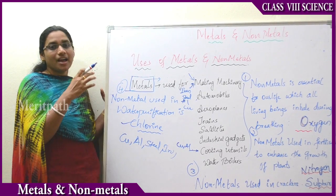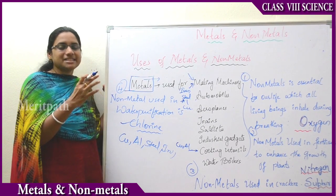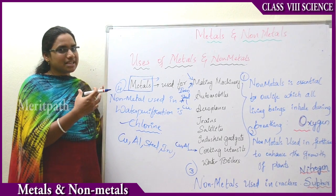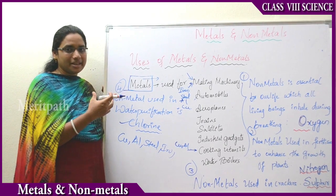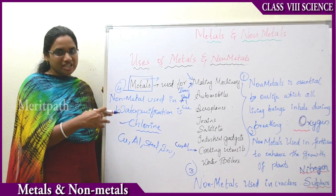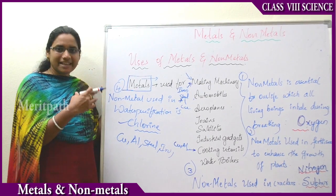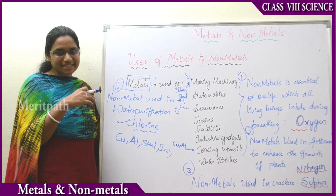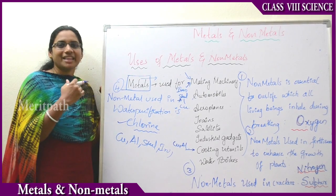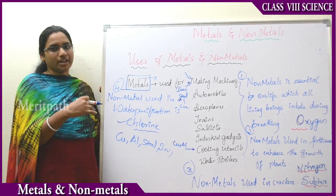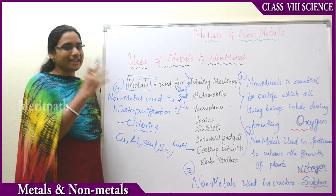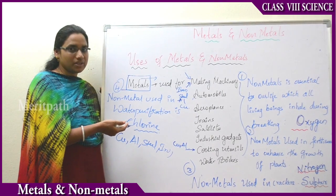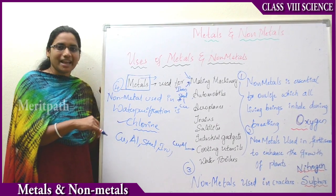In this section we have learnt about metals and non-metals, and how they are classified based on physical and chemical properties. Physical properties include ductility, malleability, sonorous nature, and conductivity of heat and electricity. Chemical properties covered how metals and non-metals react with oxygen, acids, bases, and water, allowing us to classify them. We also covered their practical uses, concluding the topic of metals and non-metals.